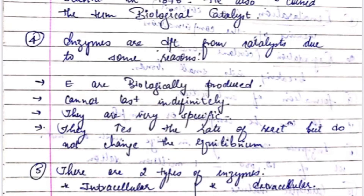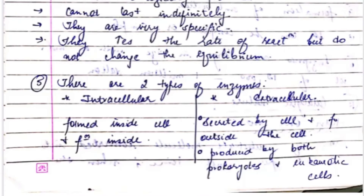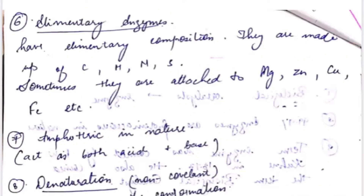Enzymes are of two types: intracellular and extracellular. Intra means they are formed inside the cell, and extra means they are secreted by the cells and function outside the cells. They are produced by both prokaryotes and eukaryotes.